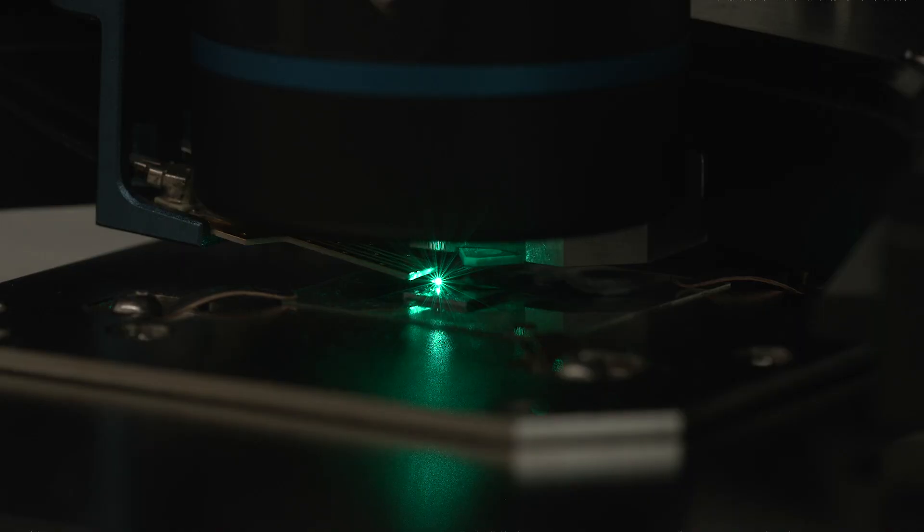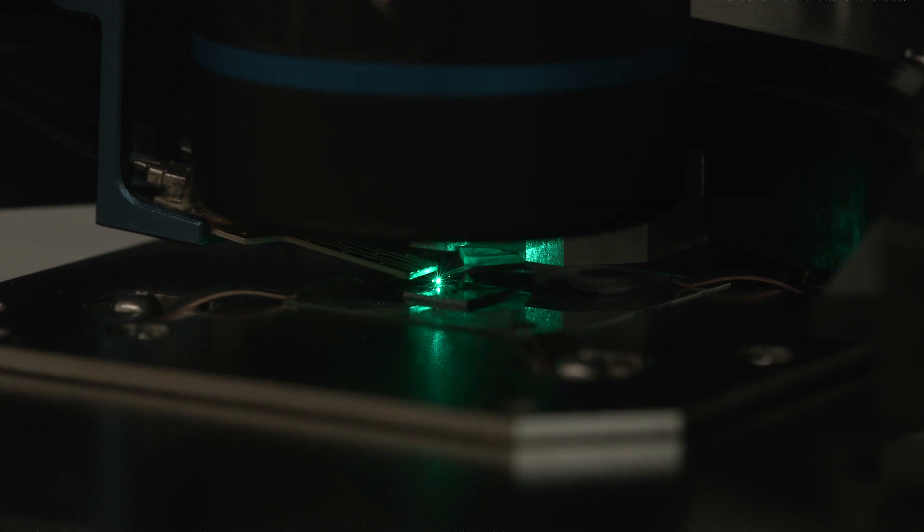The scanning tip is important to the measurement because it contains the NV center at the tip, and this is the sensor that we use to detect magnetic or electric fields. Furthermore, the nano-pillar structure in the diamond helps to improve collection efficiency so that we can collect more of the NV center fluorescence.